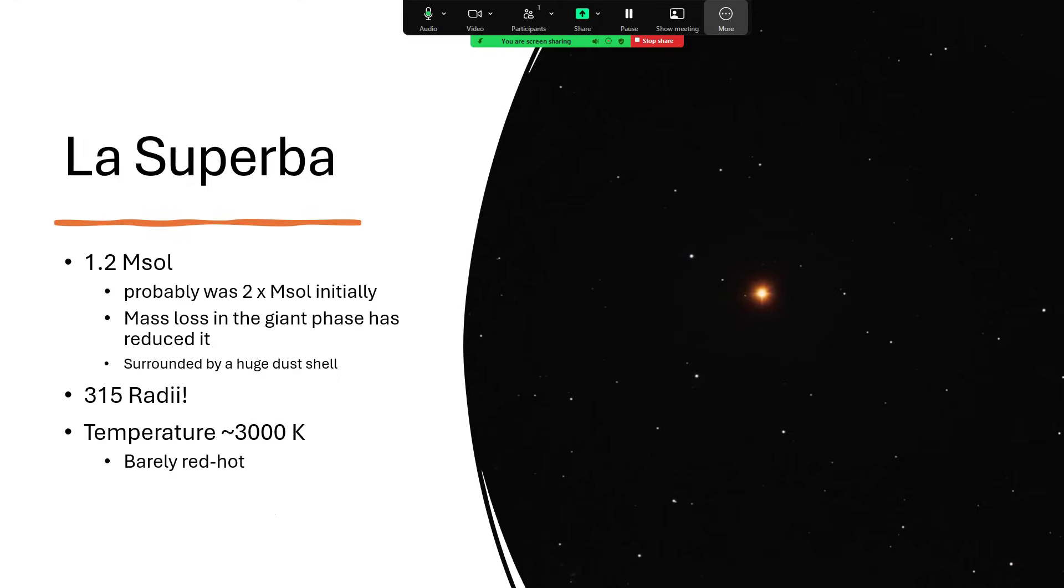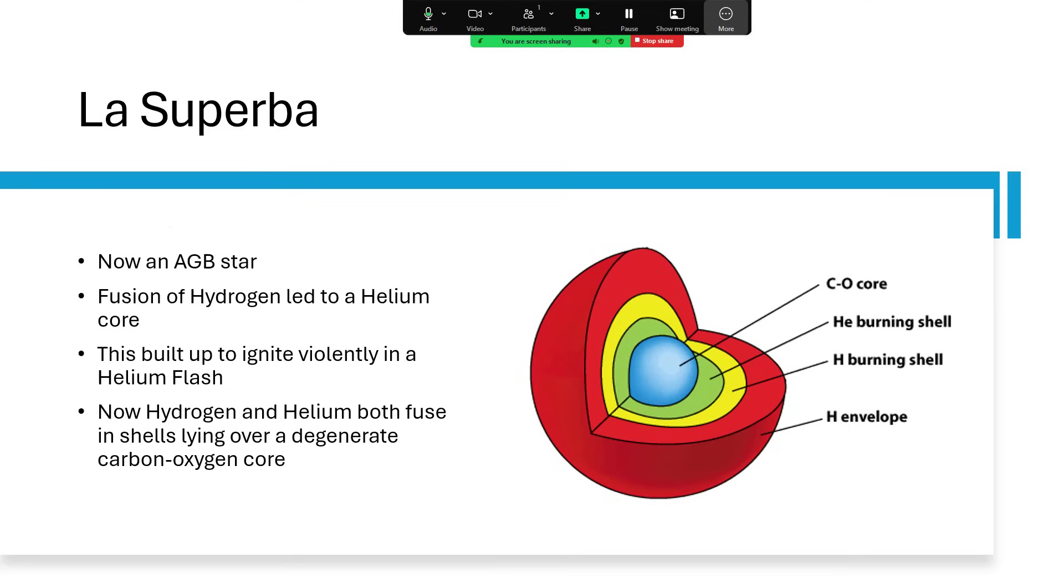Here's a lovely image of La Superba. Just a little bit more massive than the Sun, 1.2 solar masses, but probably not always so. It was probably double the Sun's mass when it was formed, but it has been in the giant phase for some considerable time now and that means it's very old, losing mass, pouring off into a dust shell around it. That dust shell is partly why we see so much of the carbon and also the coloration of the star is affected by the dust. 315 times the radius of our Sun, so very much a giant, and barely red hot at about 3,000 degrees.